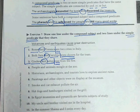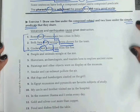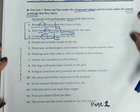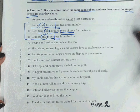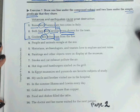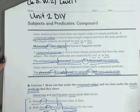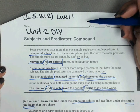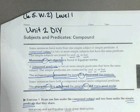Go ahead and do numbers four through fourteen. After you're finished, turn this into the tray. Again, make sure that your name is at the top.